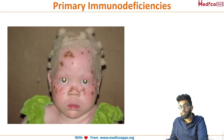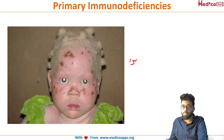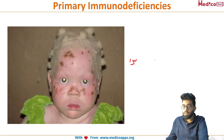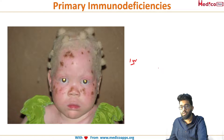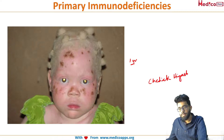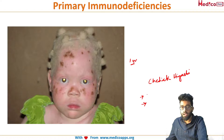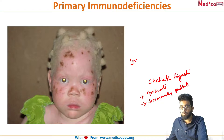Coming to the next disorder: you see a one-year-old female child with cutaneous albinism and blonde hair. We are dealing with immunodeficiency combined with albinism. This is Chediak-Higashi syndrome. There are very few differential diagnoses for primary immunodeficiencies with albinism; they include Chediak-Higashi syndrome, Griscelli syndrome, and Hermansky-Pudlak syndrome — syndromes which have immunodeficiency and partial or complete albinism.